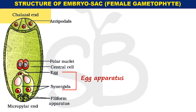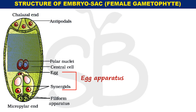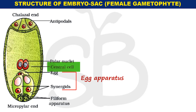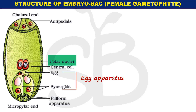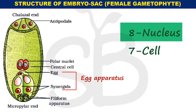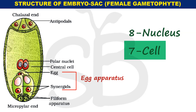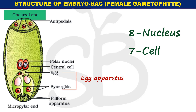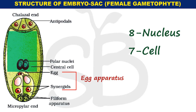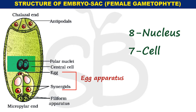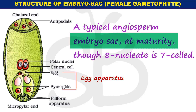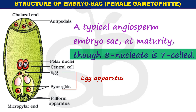On the opposite end, there are three cells called antipodals. At the center there are 2 polar nuclei in a large central cell. Therefore, a typical angiosperm embryo sac at maturity has 8 nuclei and 7 cells.